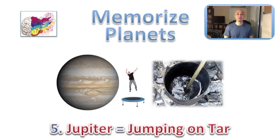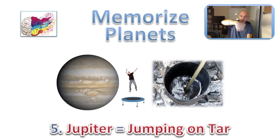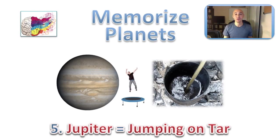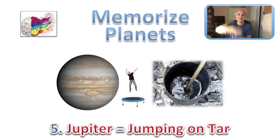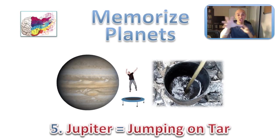Fifth location is Jupiter. I picture 'jumping on tar' — Jupiter, jumping tar. Maybe there's a trampoline on the fifth location, but instead of bouncy material it's made out of tar. As you bounce, tar drips from your feet all over that fifth location. Add all the senses — what does it smell like, taste like? Now quickly review: first location — Mercury; second — Venus; third — globe for Earth; fourth — Martian for Mars; fifth — jumping on tar for Jupiter.